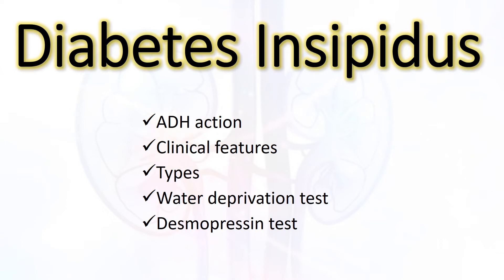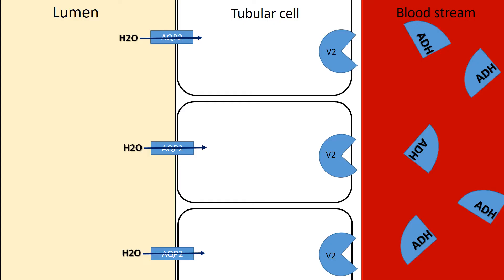Today we are going to talk about diabetes insipidus. Before that, let's look at some details about ADH, or vasopressin. Antidiuretic hormone is secreted by the posterior pituitary in response to an increase in osmolality of the extracellular fluid.